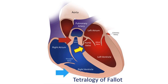The conditions included in Fallot-like physiology are: tetralogy of Fallot; d-transposition of great arteries with VSD and pulmonary stenosis (PS); L-TGA with VSD and PS; tricuspid atresia with VSD and PS; double outlet right ventricle (DORV) with VSD and PS; and single ventricle with PS.